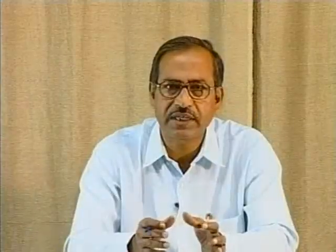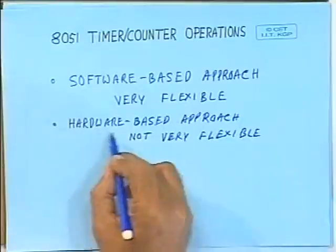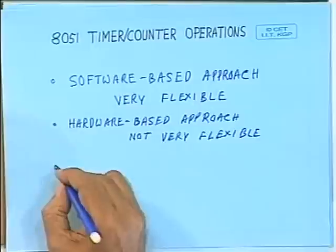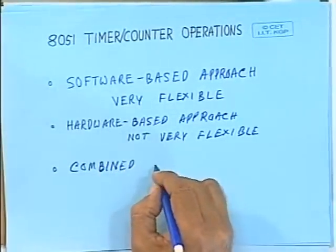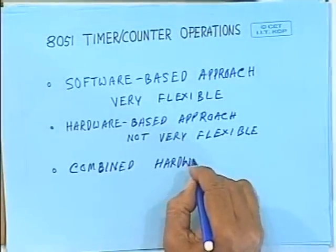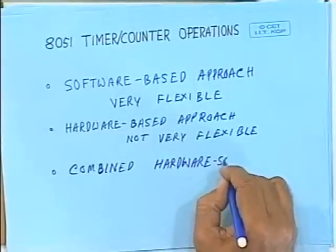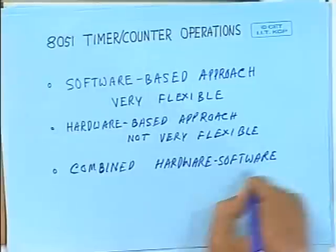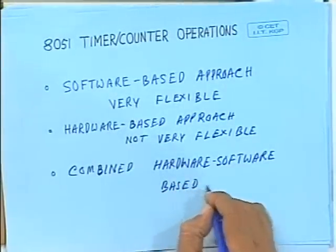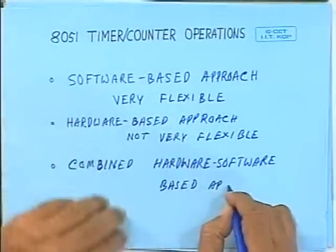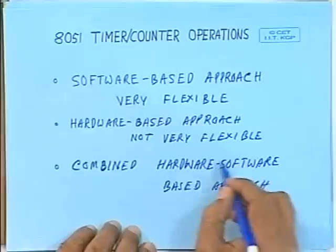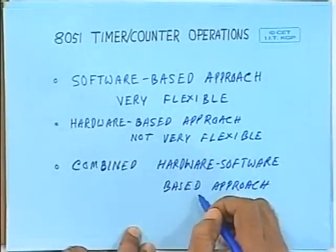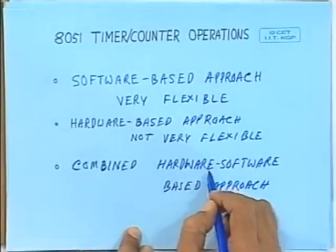There are numerous applications where the processor has to do many other operations along with generating clocks and time delays. In such a case, we can use a hardware-based approach, but it is not very flexible. So the best alternative is to use a combined hardware-software based approach. Together, it will perform generation of clock, counting, delays, and so on — flexible like a software approach, while the processor is not tied down just for this job.